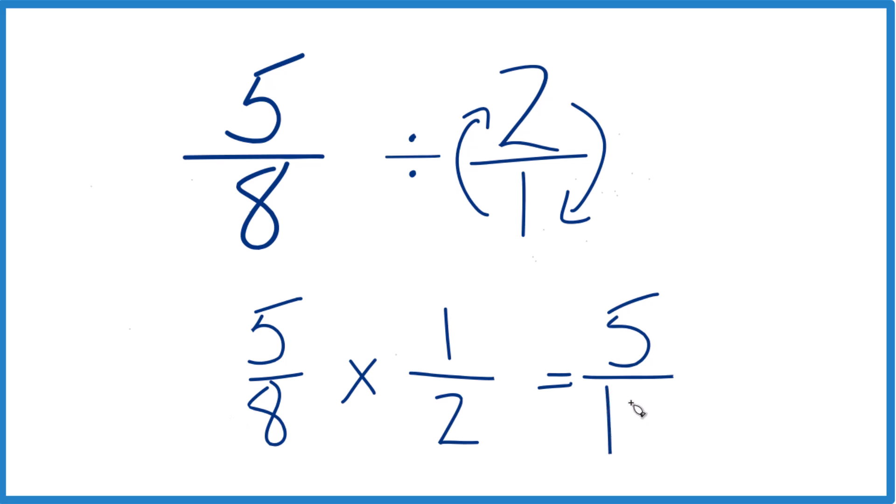8 times 2, that's 16. So 5 eighths divided by 2, or you could say 5 eighths times 1 half, that gives us 5 sixteenths.